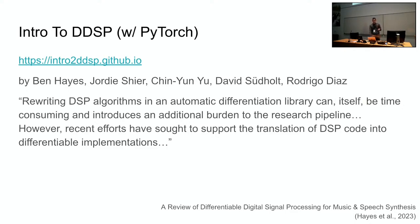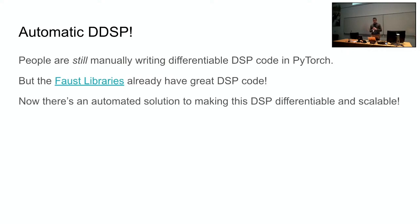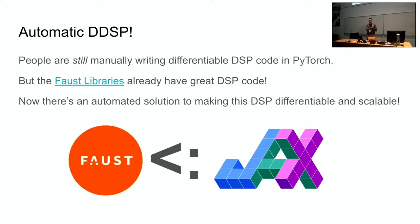And in it they write rewriting DSP algorithms in an automatic differentiation library can itself be time consuming and introduces an additional burden to the research pipeline. However, recent efforts have sought to support the translation of DSP code into differentiable implementations. So what they're acknowledging is that this process of rewriting, of having an audio signal processing engineer write that code a second time in a machine learning framework is time consuming and prone to errors and they're looking for an automated solution but their second sentence there gave a shout out to some of the work that I've been doing in Faust and Jax which is automatic translation from an audio DSL such as Faust into a machine learning framework which is DDSP. So the takeaway point is that people are still manually writing differentiable DSP code in PyTorch which is time consuming and error prone and they're not taking advantage of the Faust libraries which already have great DSP code. So I'm happy to share with all of you that there is an automated solution to making this DSP differentiable and scalable and that solution is Faust to Jax taking the audio DSL of Faust and automatically converting it into the Jax machine learning framework for numerical optimization.